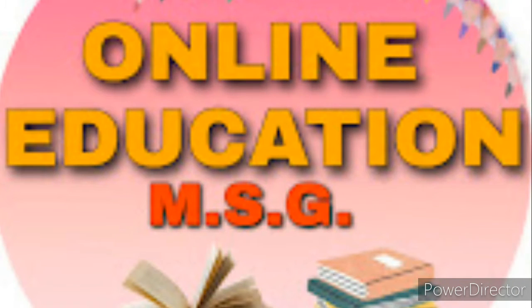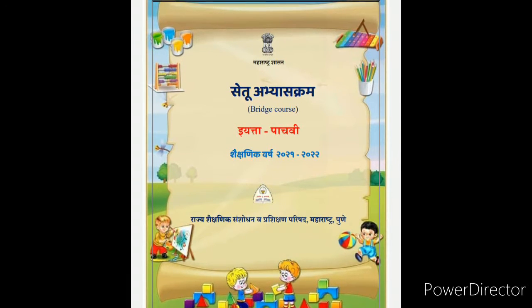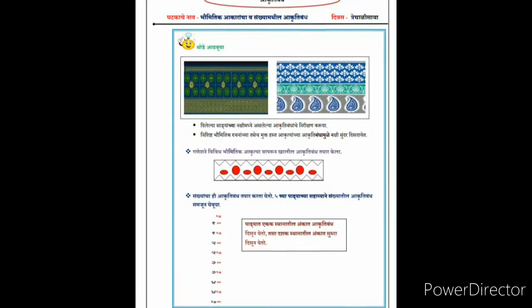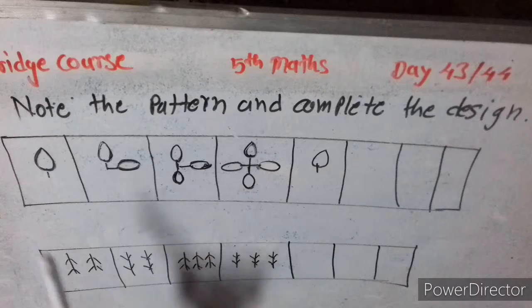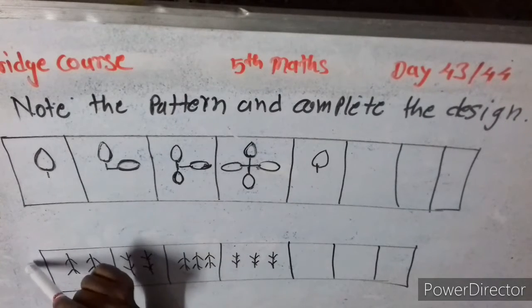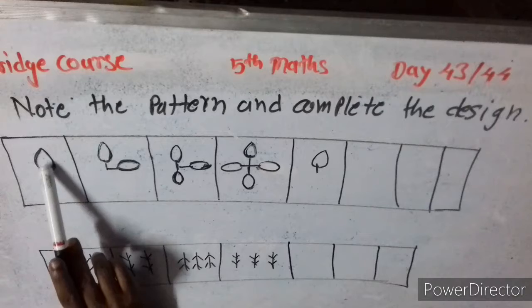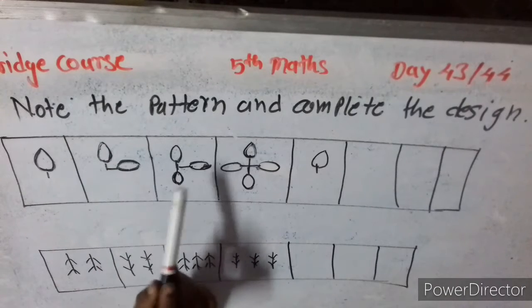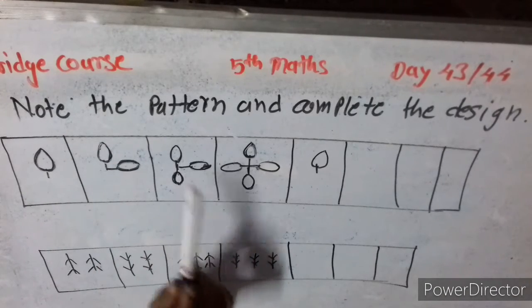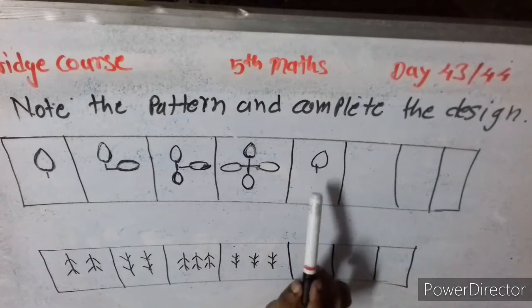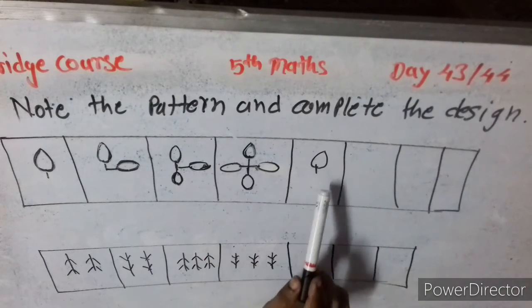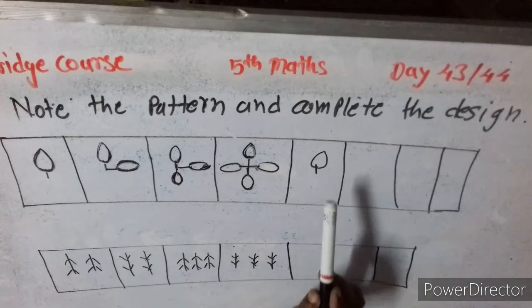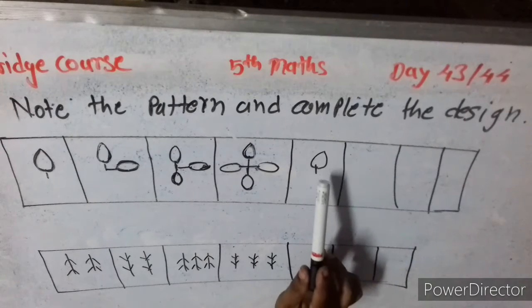Bridge course, fifth standard mathematics, day 43-44. We learn about patterns and design. Note the pattern and complete the design. First box showing one leaf, second box showing two leaves, third box showing three leaves, fourth box four leaves. The number of leaves are increased: one, two, three, four.